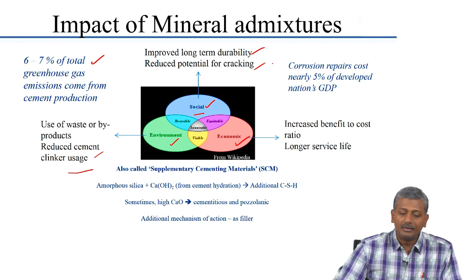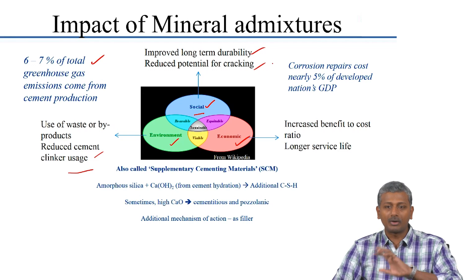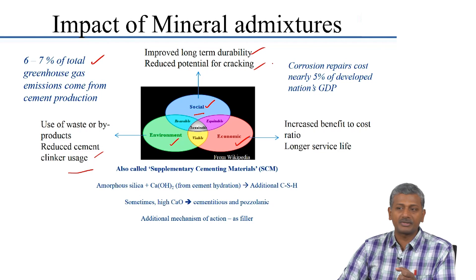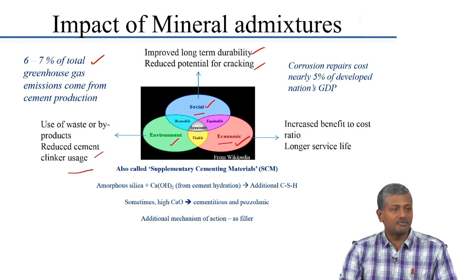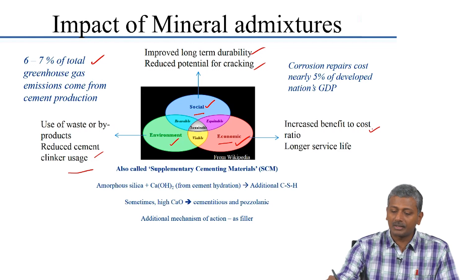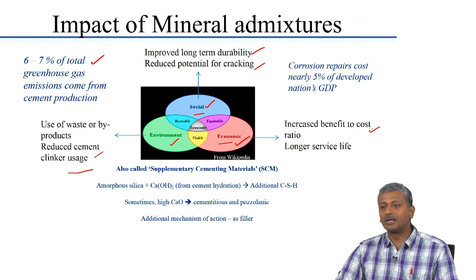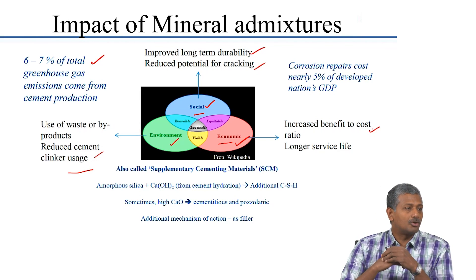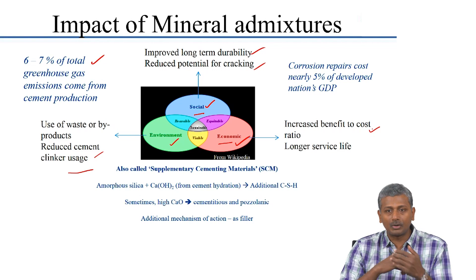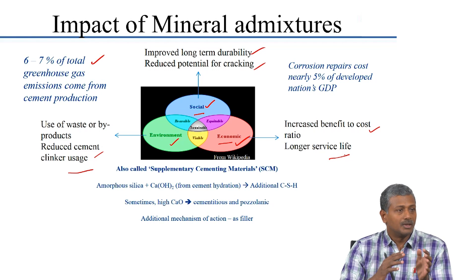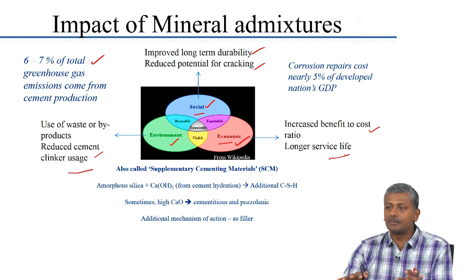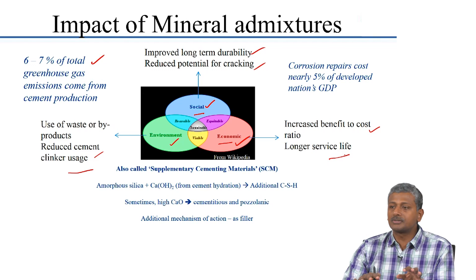Improved long-term durability and reduced potential for cracking — I am mentioning this even before we get into the mechanisms by which durability parameters are improved when fly ash or slag are used as mineral admixtures; we will discuss that in due course. As far as economic aspects are concerned, reducing cement usage means saving money on concrete. More importantly, you get an improved benefit-to-cost ratio because you reduce initial concrete cost while prolonging the life of your concrete structure. You get longer service life as a result of using mineral additives, if you use them in the correct fashion — and much of the sustainability impact can only be realized if mineral admixtures are used correctly.